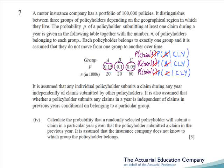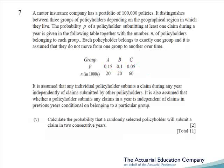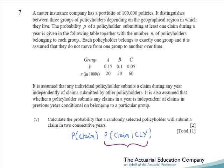The final part of the question asks us to calculate the probability that a randomly selected policyholder will submit a claim in two consecutive years. This builds on all the previous parts. Essentially we want to calculate the probability of claiming in the first year and then multiply it by the probability of claiming in the second year given that they claimed in the first year — which is what we just calculated in part four. And the first probability is what we were asked in part one. Multiply them together and you're done.